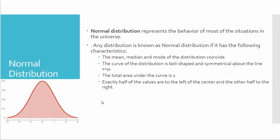Hello, welcome back. In this video we'll talk about normal distribution, which is also called Gaussian distribution. Why is it called normal distribution? Because it represents the behavior of most situations in the universe. It has characteristics where the mean, median, and mode are all the same, and the distribution is symmetric. So exactly half of the values are to the left of the center and half are to the right of center.